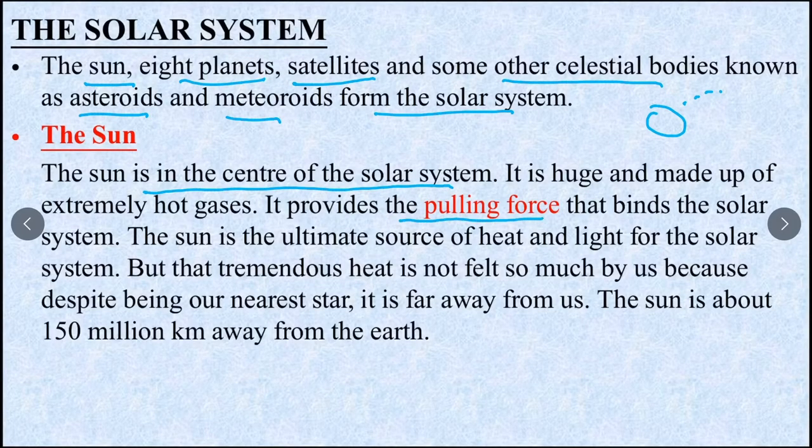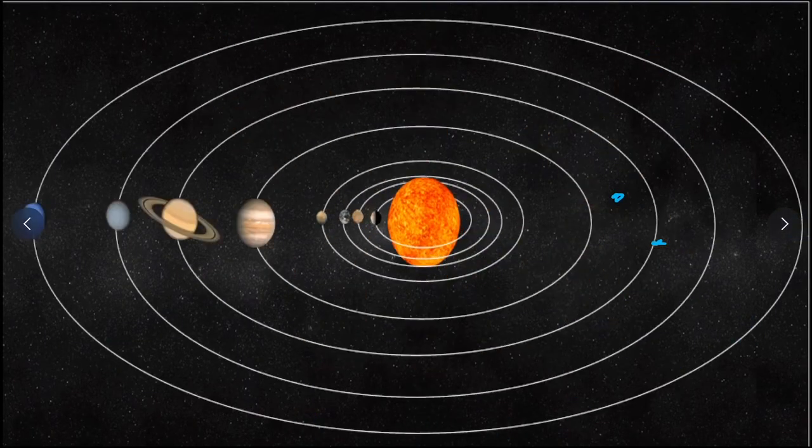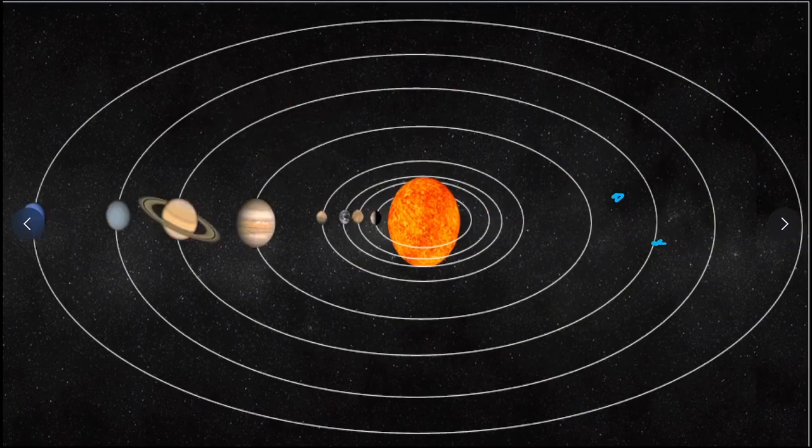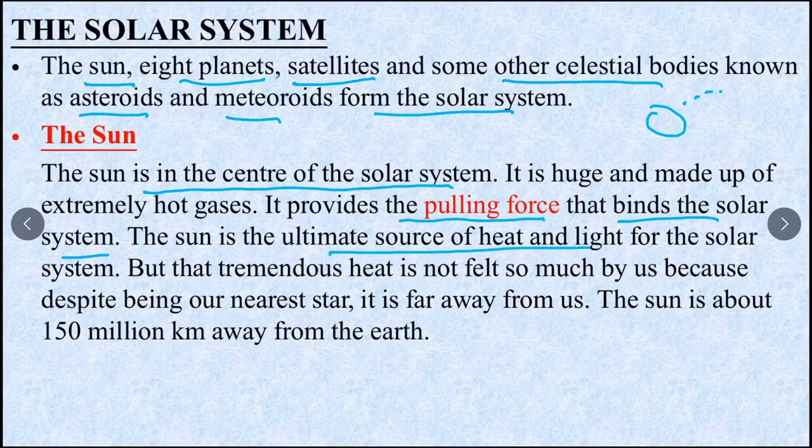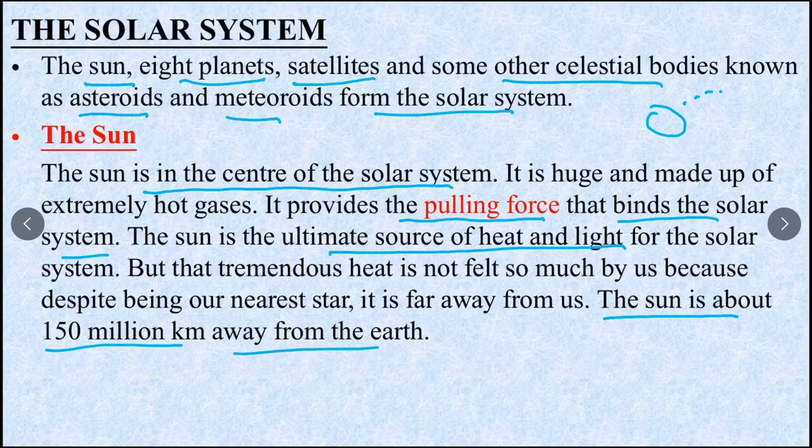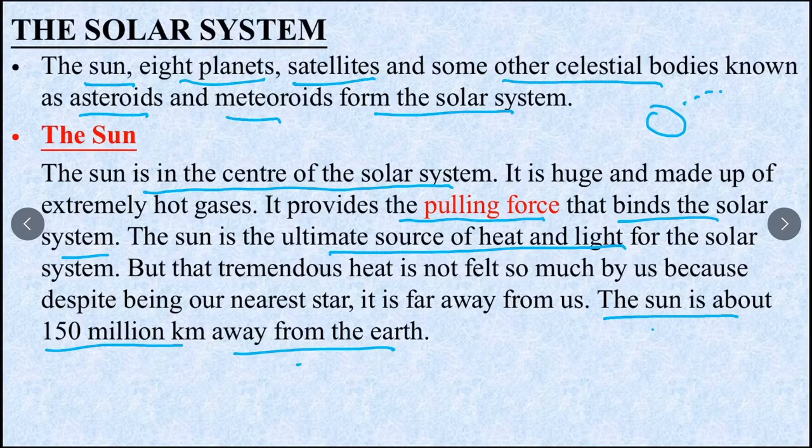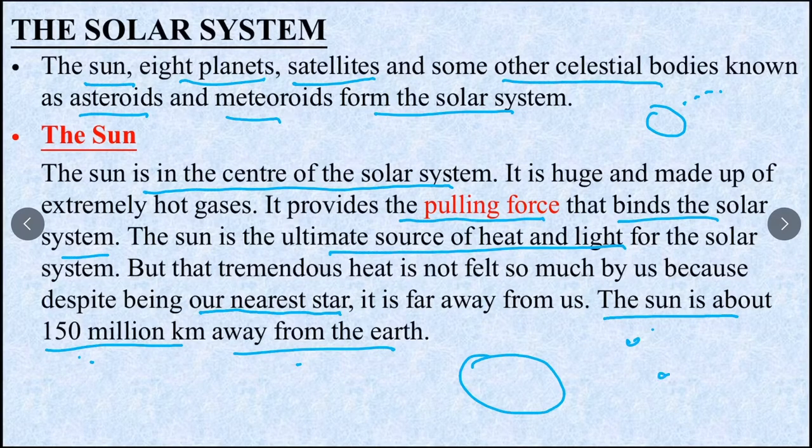Sun is in the center of the solar system. It provides the pulling force - gravitational force - which keeps all the planets in orbit, flying in circles. The sun is the ultimate source of heat and light. The most important thing is the sun is about 150 million km away from us. Sun and earth distance is 150 million km.